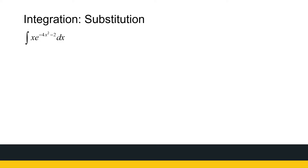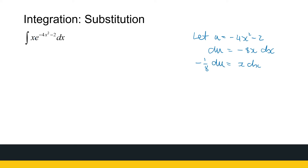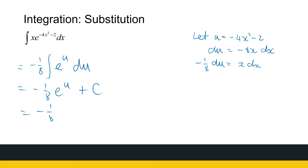Next one: x times e to the power minus 4x squared minus 2. We've got an x times e to the power of something, so it's not straightforward. The ugly function I'm looking at is minus 4x squared minus 2. Let u equal to minus 4x squared minus 2. du is then minus 8x dx. I don't have a minus 8x, but I've got x dx — so that's minus 1 over 8 du. So that's minus 1 over 8 times the integral of e to the power u du. The antiderivative of e to the power u is just e to the power u. So we've got minus 1 over 8 e to the power minus 4x squared minus 2 plus c.